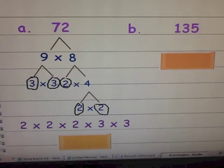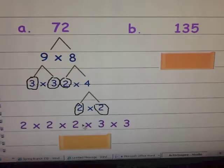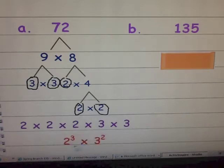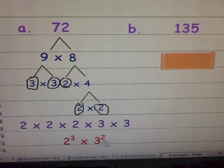Or I can go ahead and use the shorter method using exponents. My first factor is two — how many twos do I see? There are three of them. My second factor is three, and there are two of those. So I should have two to the third power times three to the second power, or two cubed times three squared. This is the prime factorization of 72.